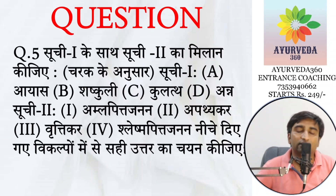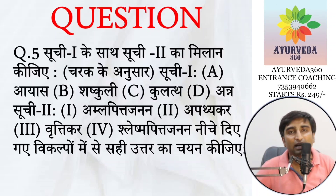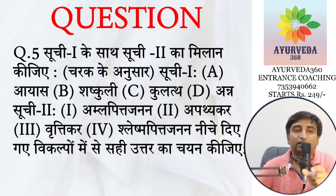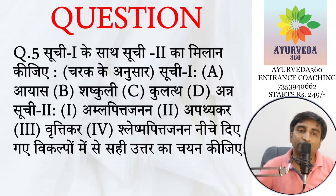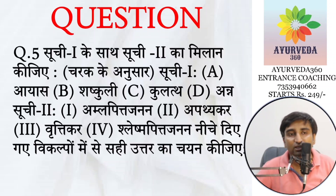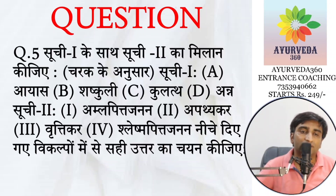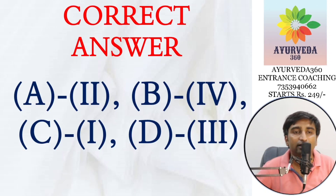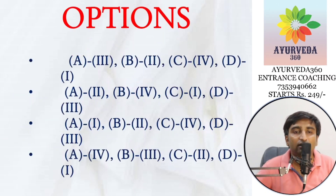The next one is again a table question related to Agri Prakarana. It is a very easy one. One side has Ayasa, Shashkuli, Kulatta, and Anna. The second column has Amlapitra Jaranam Shireshtam, Apathya Karanam Shireshtam, Hriti Karanam Shireshtam, and Shleshma Pistha Jaranam Shireshtam. If you know a few of them you can easily guess: Anna is Vriti Karanam Shireshtam, Kulatta is Amlapita Jaranam Shireshtam, Ayasa is Apathya Karanam Shireshtam, and Shashkuli is Shleshma Pistha Jaranam. The answer is A2, B4, C1, D3 — option number 2.